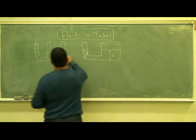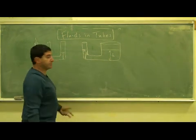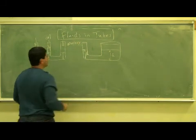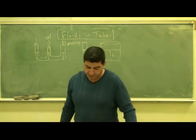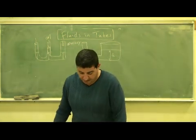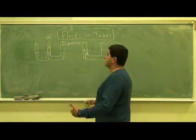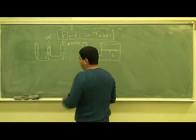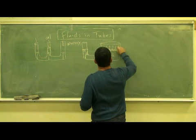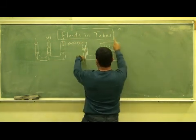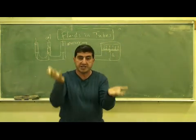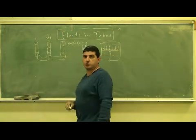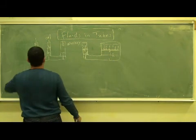So what happens if you put some oil or mercury in one tube? The heights will adjust. The key principle is that the pressure at any given height must be equal across connected tubes. If the pressures are not the same, the fluid will readjust itself until they are equal. That's the principle we use to solve these kinds of problems.